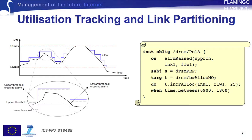The figure on the left shows that when the monitored utilization exceeds the upper threshold, the allocated bandwidth is increased. Similarly, when the utilization crosses the lower threshold, this value is decreased.